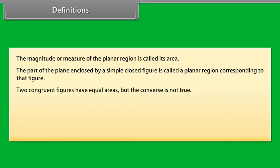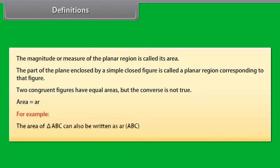Two congruent figures have equal areas but the converse is not true. The area of a figure can also be denoted by AR. For example, area of triangle ABC can also be written as AR ABC.